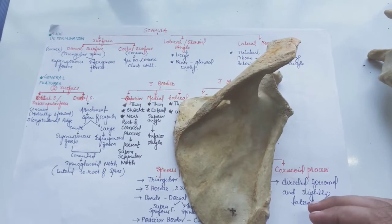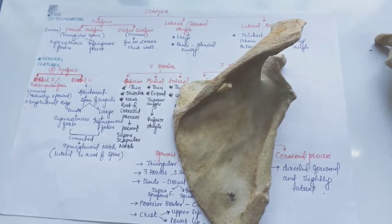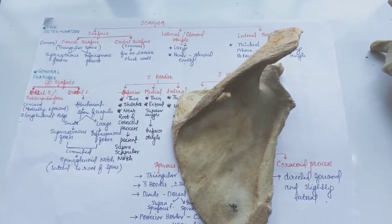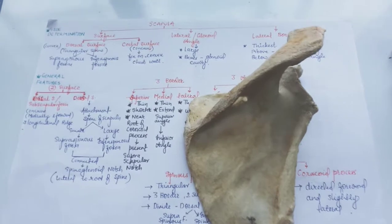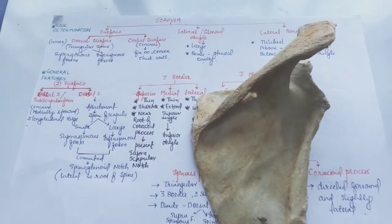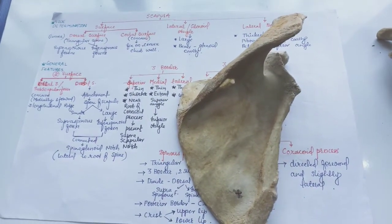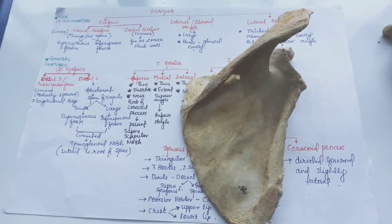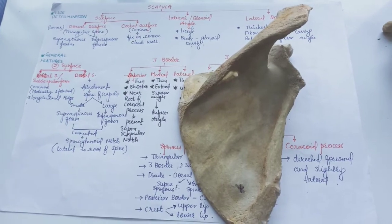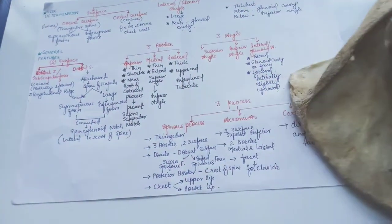Hello everyone, myself Dr. Priya. Welcome back to Dr. Priya's work. Now we will learn about the general features of the scapula. The scapula has two surfaces, three borders, three angles, and three processes.